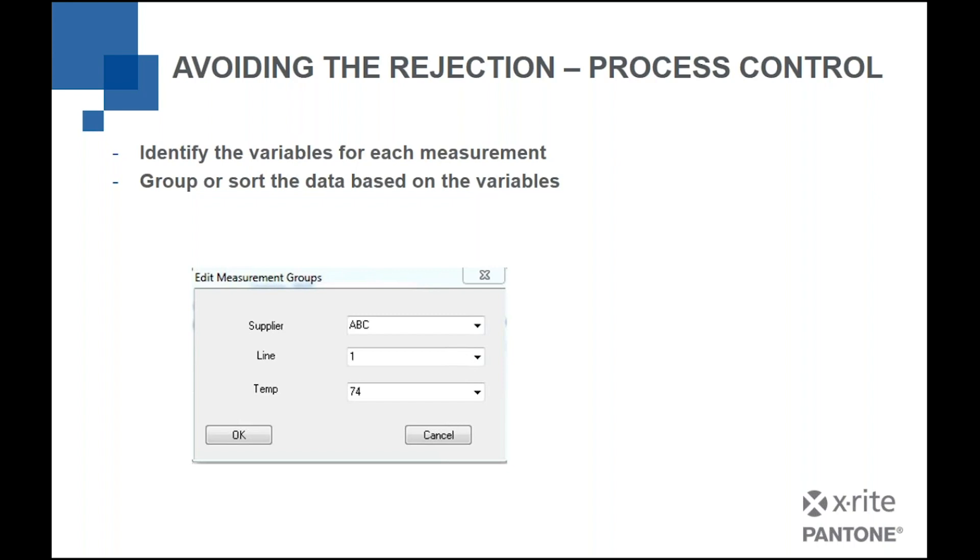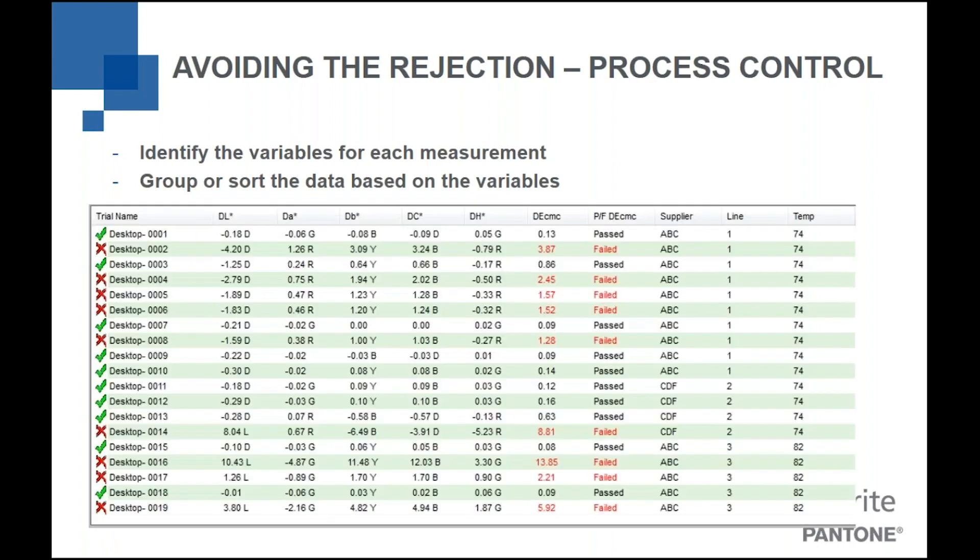And then ultimately, if I take those measurements and do that, you'll see here that I can now sort this data based on the variables. I measured my desktop, as you can see, 19 different times against a standard. Some of it passed, some of it failed. I caused that to happen, of course, just to give you an example.